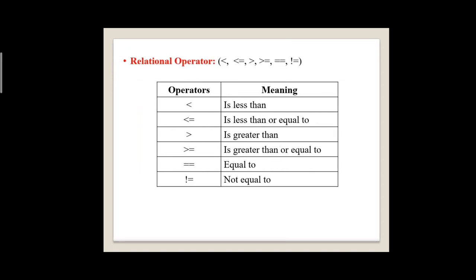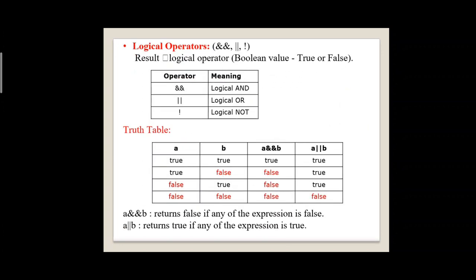Next, relational operators: less than, less than or equal, greater than, greater than or equal, equal, not equal. These operators are used to compare the values of two operands or to find the relationship between two variables. Then, logical operators. The double ampersand (&&) is called logical AND, the double pipeline symbol (||) is called logical OR, and the exclamatory symbol (!) is called logical NOT. These operators are used to combine two or more conditions, and the result is a Boolean value, either true or false.